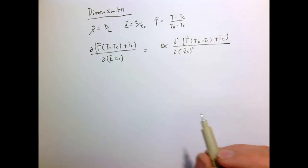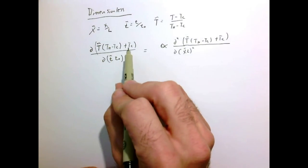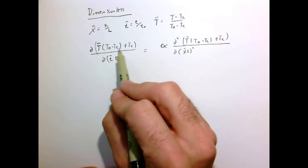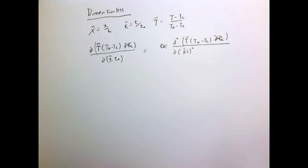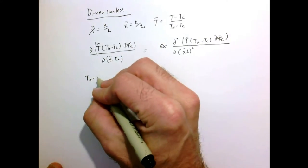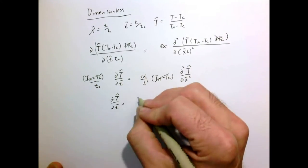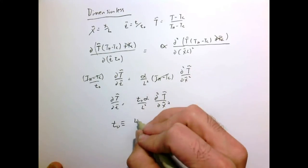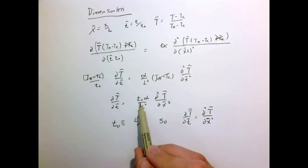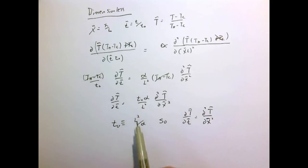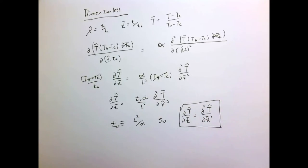I'm substituting my dimensional variables for dimensionless ones. Constants can be pulled out of the derivative operator, and the second derivative of temperature plus a constant just becomes the second derivative of temperature — the constants go away. After pulling all constants out, I see that T-naught is an arbitrary constant, so I'll define it as L-squared over alpha, making that parameter equal to one. So my equation simplifies to one with no constants.